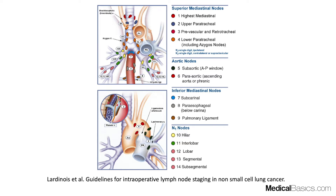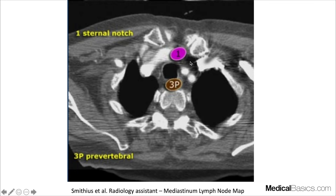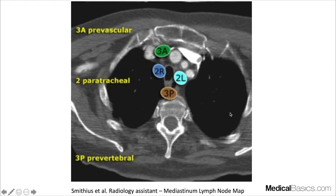Before showing all the different lymph nodes, here are a few diagrams that outline the major stations. They all kind of follow either our vasculature or our bronchus — following our trachea, main stem bronchi, and major vessels. Here we'll see our prevertebral lymph node stations, starting from the top and working our way down into the mediastinum.